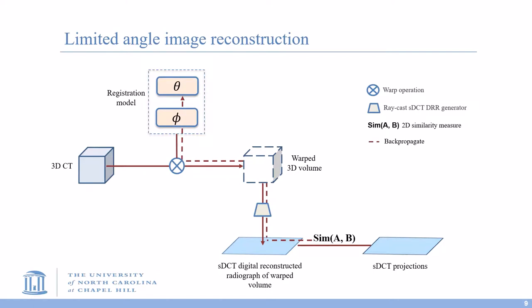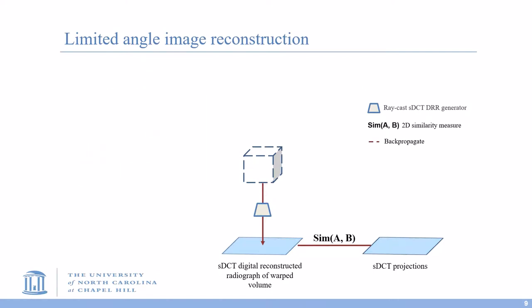Remember the registration framework? We can easily change it to an sDCT reconstruction algorithm by setting the 3D volume as the parameter. Then we can compute the differences between the DRR of the 3D volume and the sDCT projections, and then we can backpropagate the loss to the parameter.